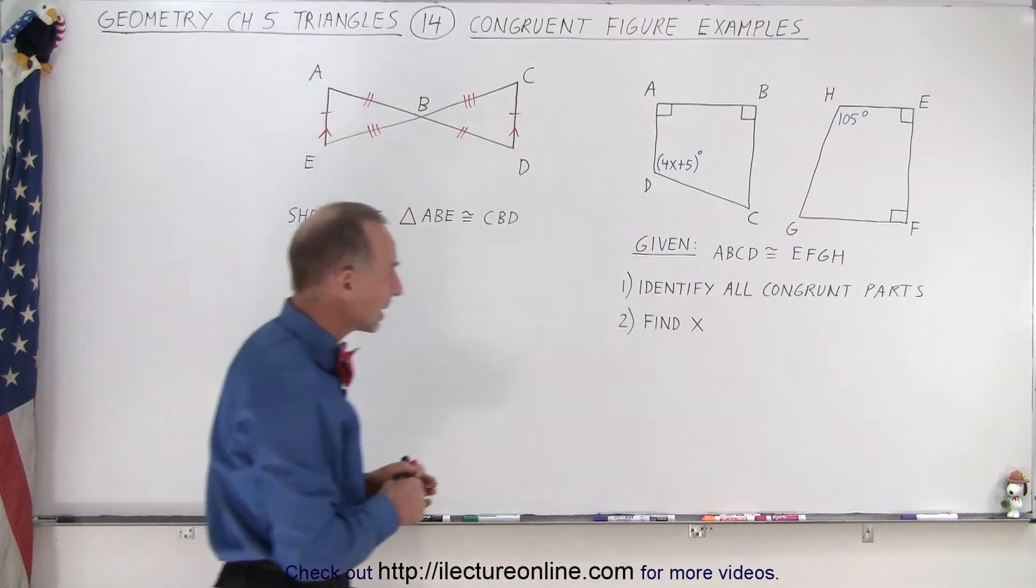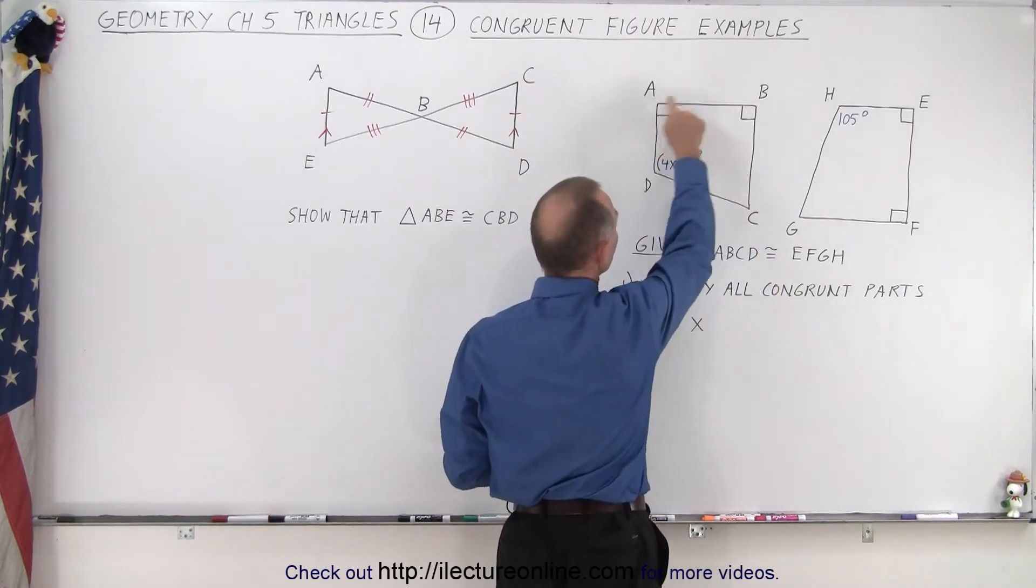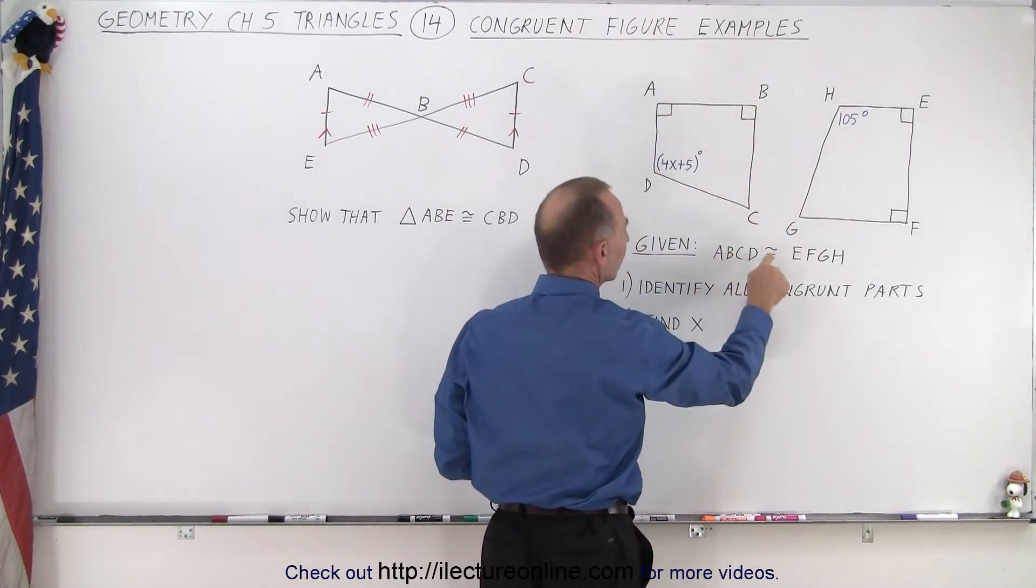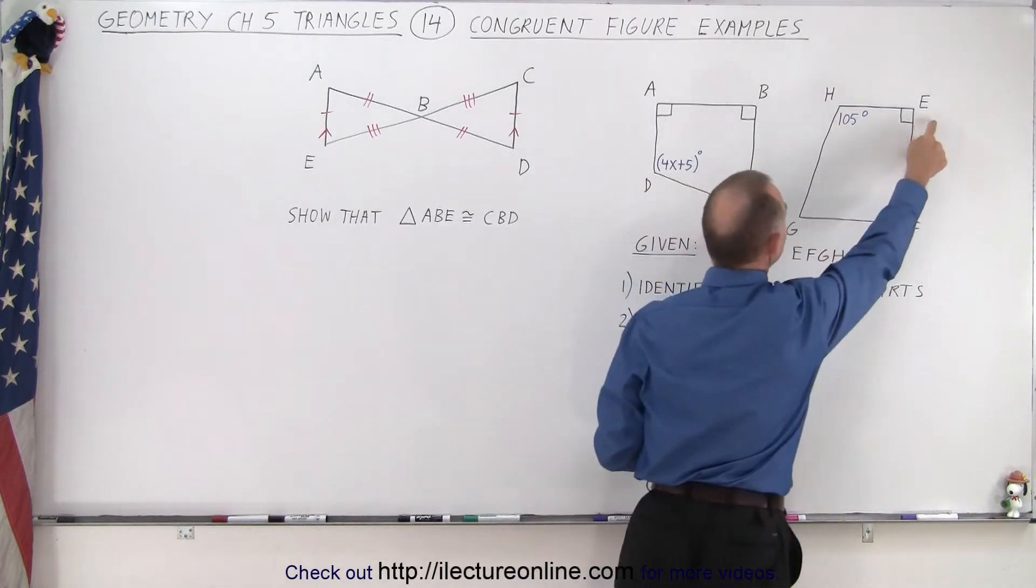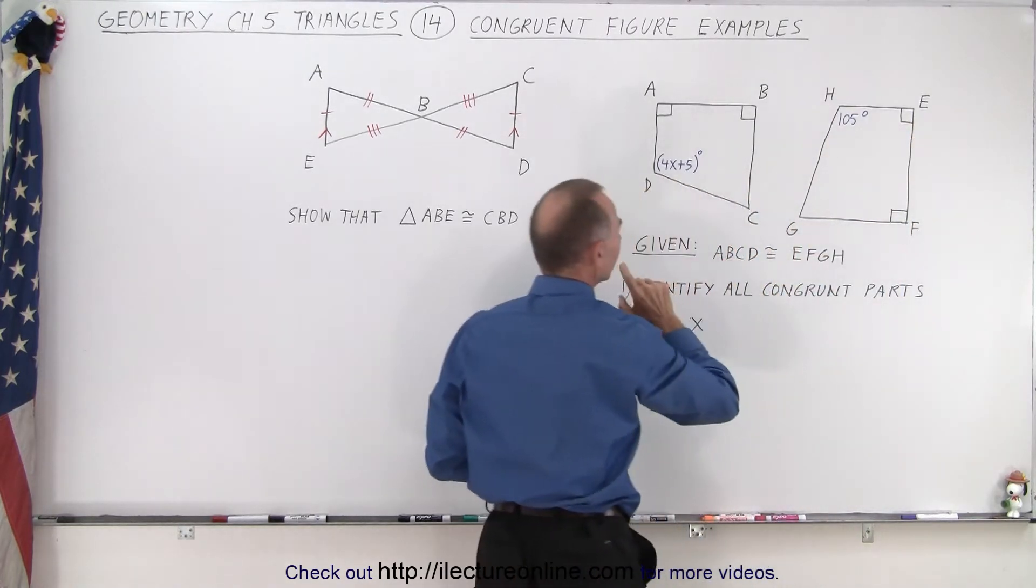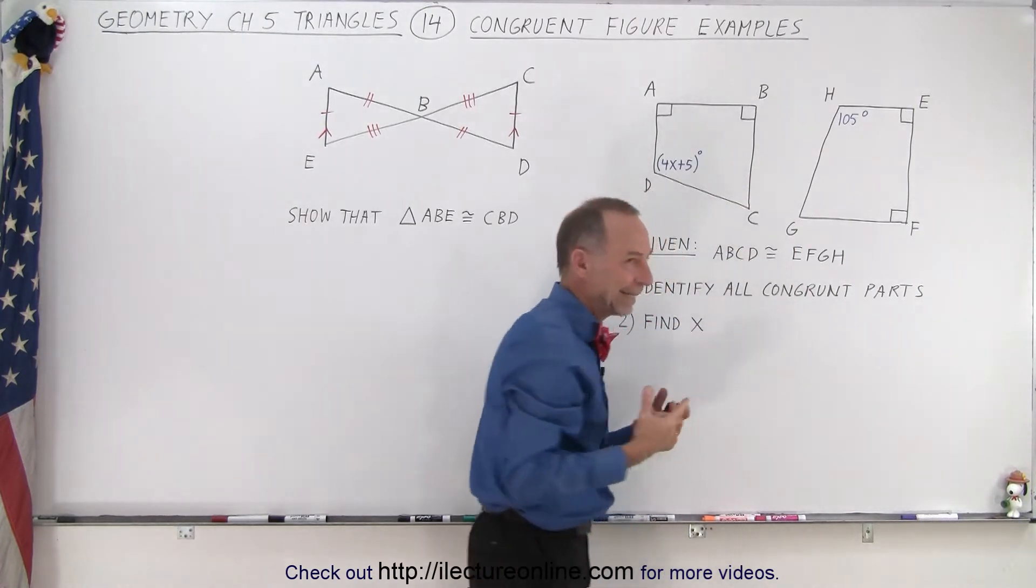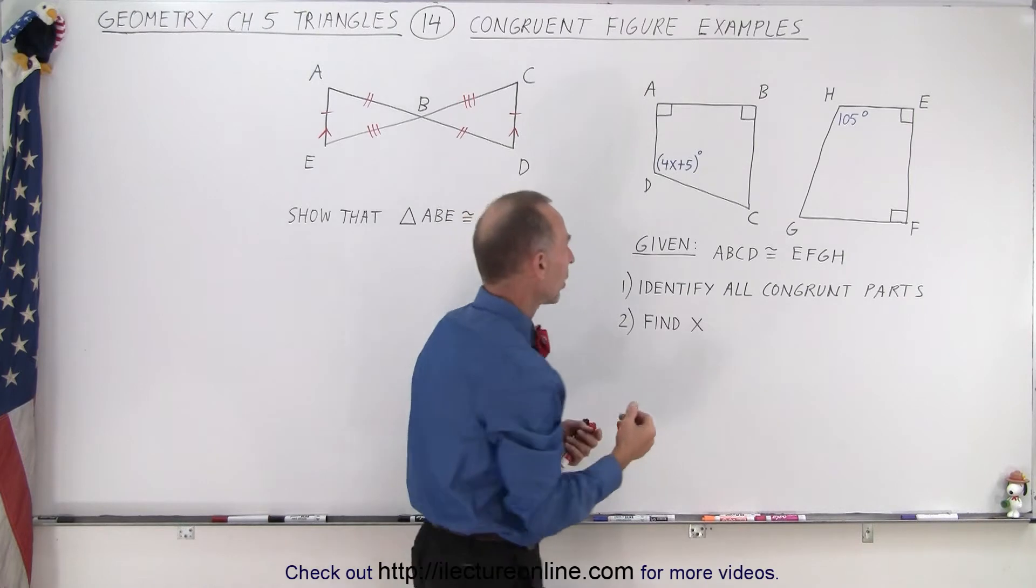And we're given here that the figure ABCD, going from here to here to here to here, is congruent to the figure E, F, G, H. Now, it may not appear that way, but we're going around the figure in a congruent way.